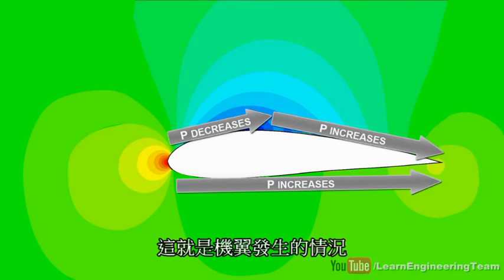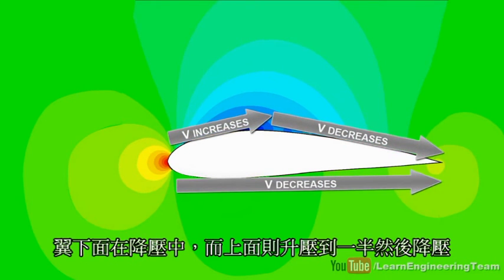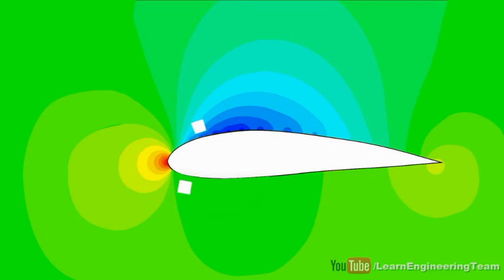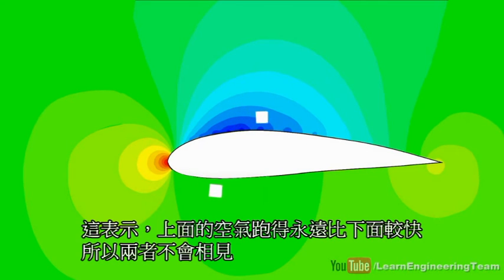This is exactly what happens in an airfoil also. The bottom particle will keep on decelerating. The top particle will accelerate up to the midpoint. This means that the speed of the top particle will be higher at any point in time, and the two particles will never meet.